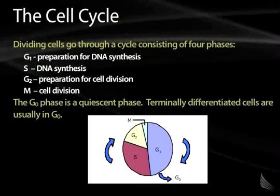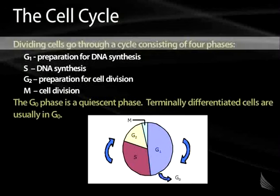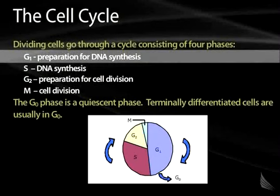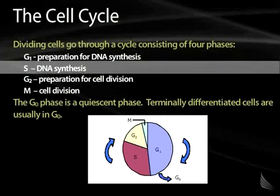The cell cycle is the cycle that dividing cells go through in producing daughter cells from parent cells. It basically consists of five phases. There's G1, which is a gap phase — the period of time in which the cell is preparing for DNA synthesis. Then there's the S phase, in which the cell is actively undergoing DNA replication, and the DNA is being completely copied into two different copies, one of which will go into each daughter cell.